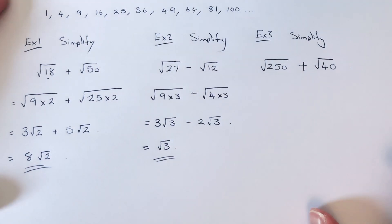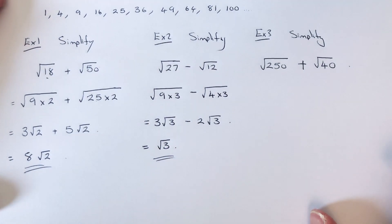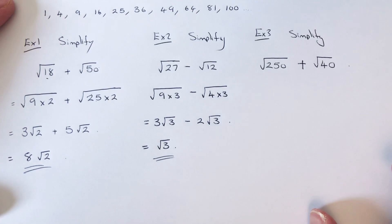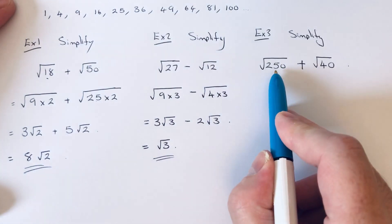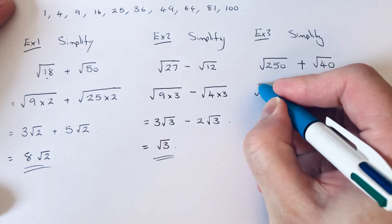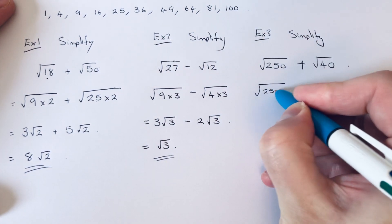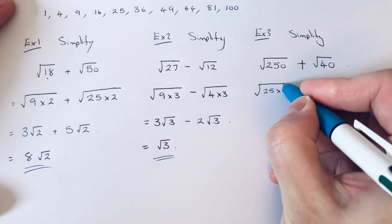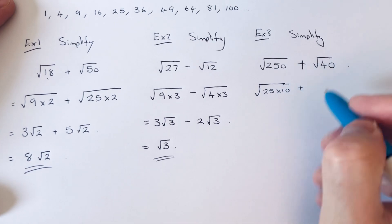So let's have a look at the final example. So we've got root 250 plus root 40. So our biggest square number which goes into 250 is 25. So we can write that as 25 times 10. Our biggest square number...